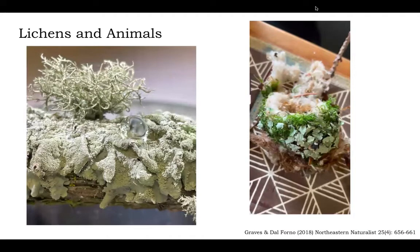Let's think about some other interkingdom interactions that this backyard case study lichen is going through. One of these is interactions with animals. In one image, you can see a droplet of water suspended on the surface of a lichen. In California, but also in much more extreme cases like the Atacama desert, lichens actually serve as a water capture site that animals then come to collect moisture from. Lichens in general, even though each individual lichen is quite small, can cover quite a bit of surface and do play an important role in water balance in different ecosystems.